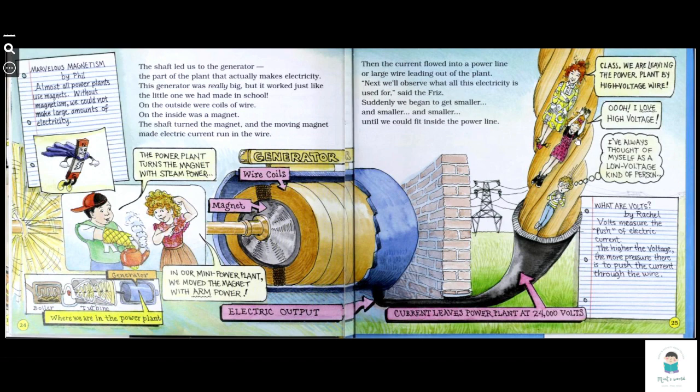We are leaving the power plant by high-voltage wire. Oh, I love high voltage. I always thought of myself as a low-voltage kind of person. What are volts? Volts measure the push of electric current. The higher the voltage, the more pressure there is to push the current through the wire. Current leaves power plant at 24,000 volts.